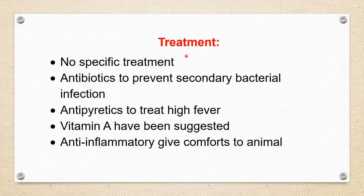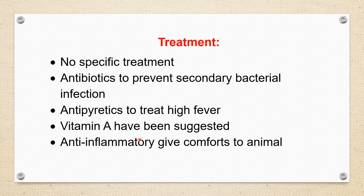We see here the treatment part. As it is a viral disease, there is no specific treatment. But the stress of disease may invite secondary bacterial infection, so to avoid that, give chemotherapeutics or antibiotics. When there is high fever, it can be corrected by antipyretics. Some scientists have suggested Vitamin A because Vitamin A is useful for maintaining the integrity, structure, and function of epithelial cells, so Vitamin A may also help.